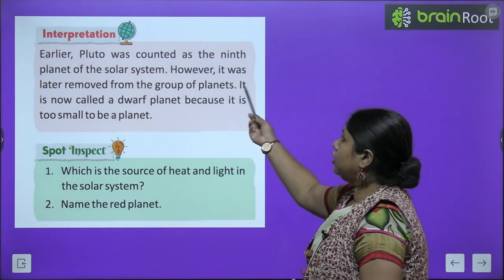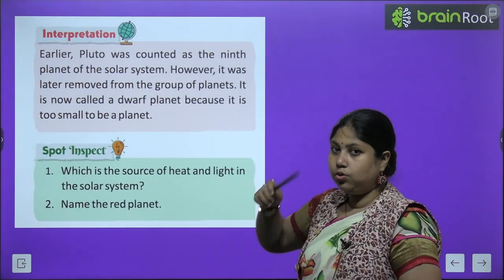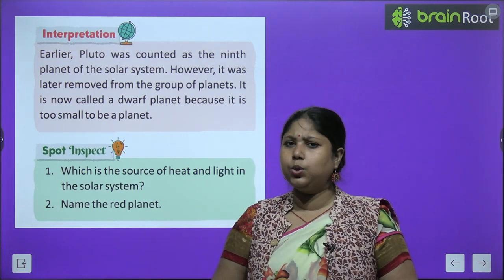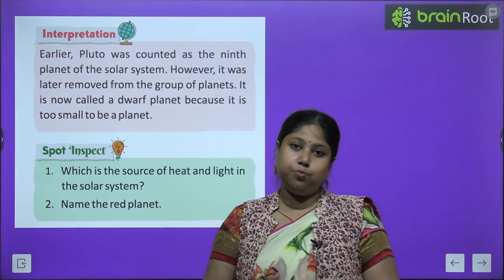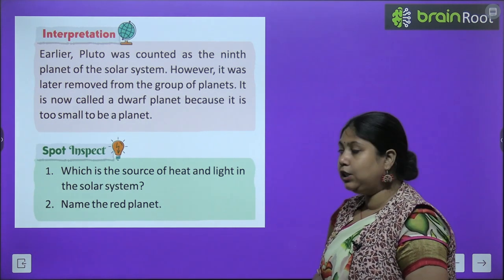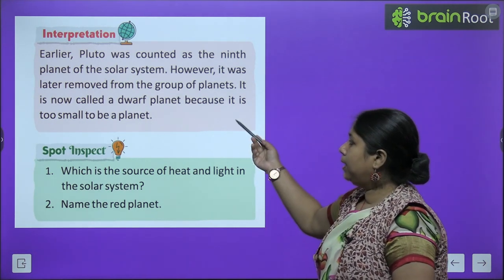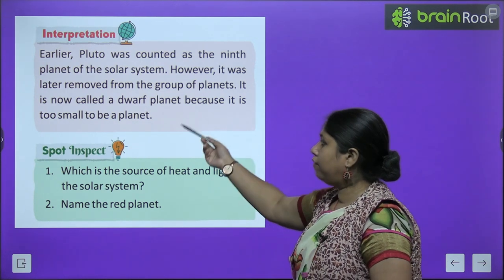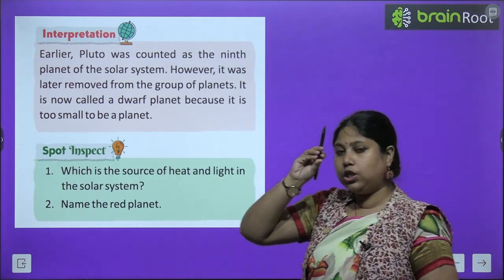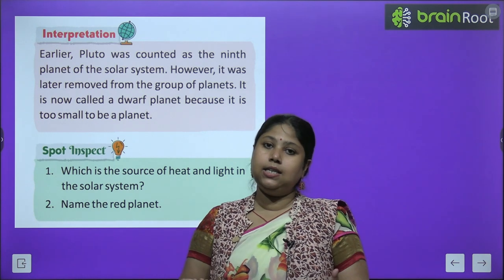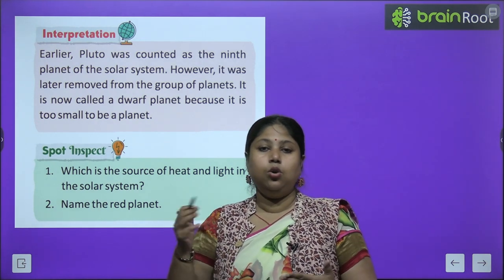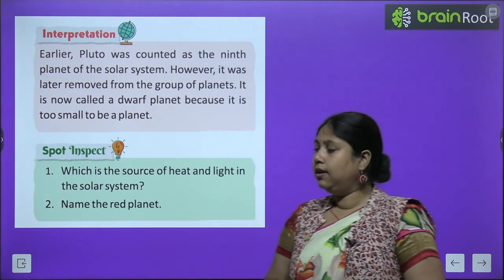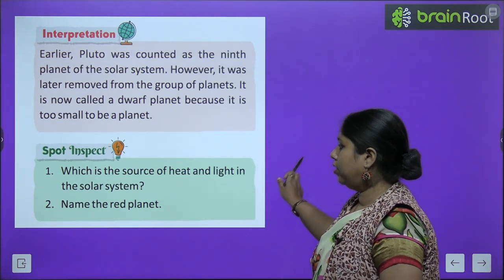Earlier, Pluto was counted as the ninth planet of the Solar System — pehle solar system mein 9 planets hua karte the. But later it was removed from the group of planets because it is a dwarf planet — bahut chhota hai size mein — isliye usko dwarf planet bol diya gaya aur solar system se remove kar diya gaya.